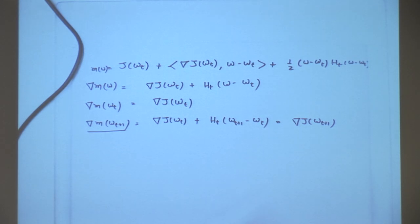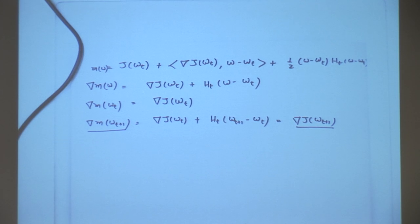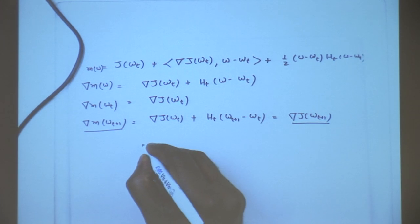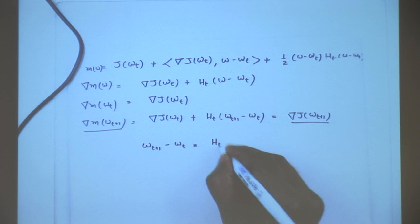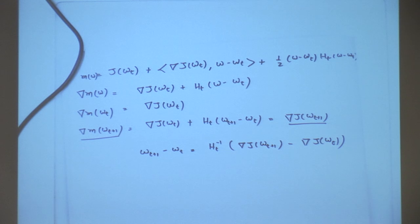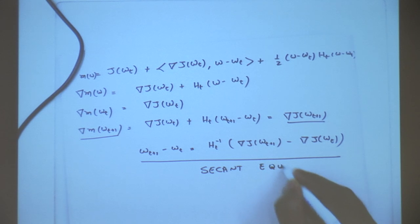This says: I want my model gradient to equal the gradient of my objective function. This makes sense — I know my current location, I know what my gradient is, I am building a model, and the model should respect the gradient at the new location as well. This is just ensuring a two-step match in the model. Once you make this a requirement, you can immediately see the condition: Wt+1 minus Wt must equal HT inverse of (gradient of J at Wt+1 minus gradient of J at Wt). This condition is called the secant equation.